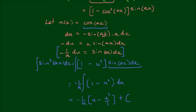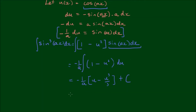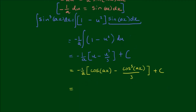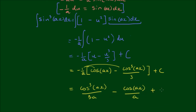We've solved the integral in terms of u, so we have to substitute cosine back in to get the complete answer. Putting cos(ax) back in, we have negative 1/a times (cos(ax) minus cos³(ax)/3) plus c. Expanding and tidying up, this gives us cos³(ax)/(3a) minus cos(ax)/a plus c. That's the integral of sin³(ax) using the method of substitution.